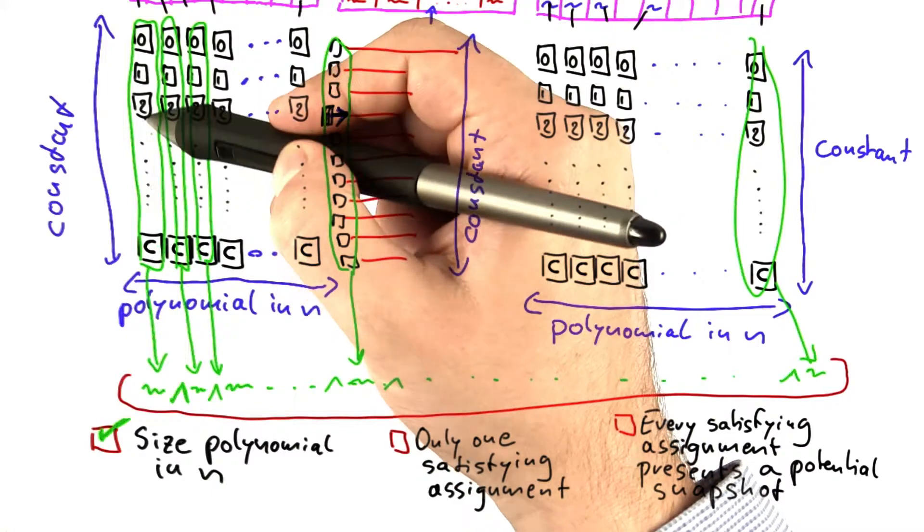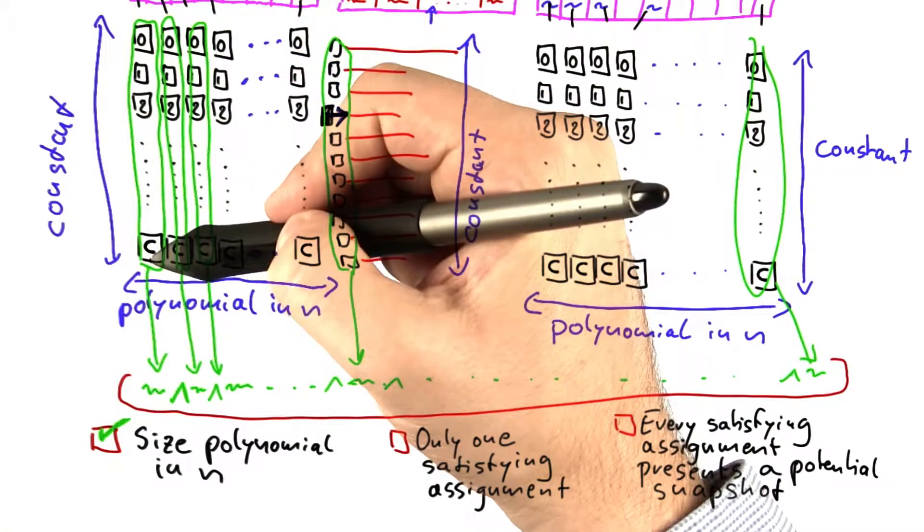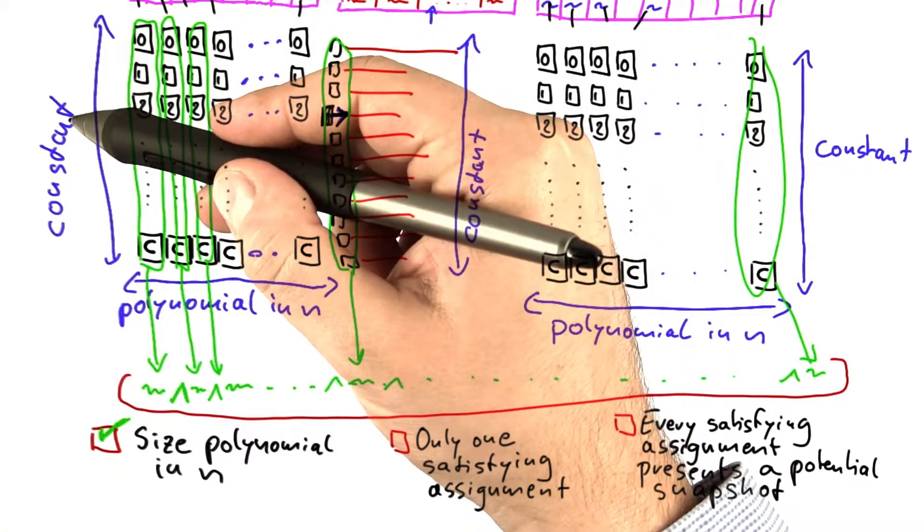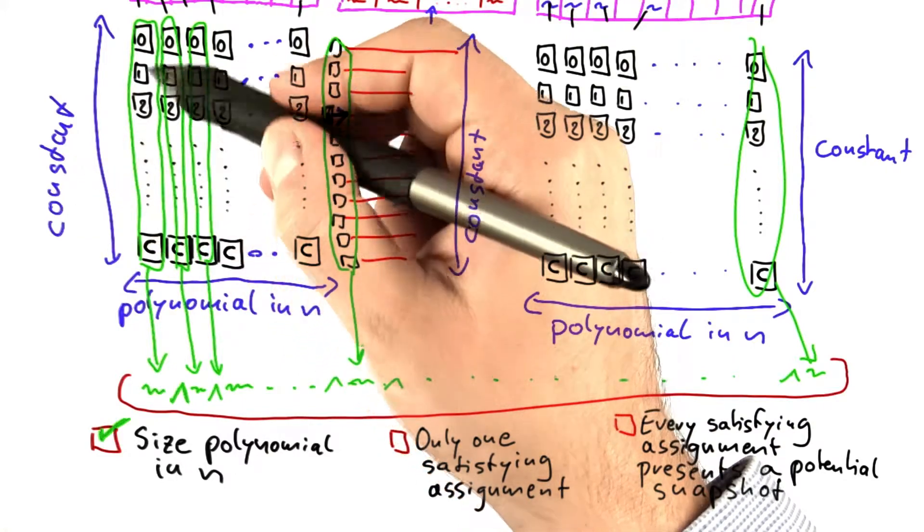First of all, how large is each one of these formulas that we're building? Well, there's a constant number of variables, and as I showed you before,